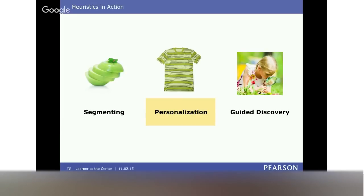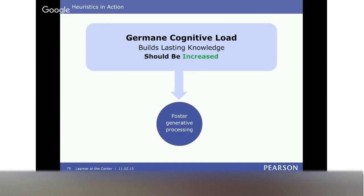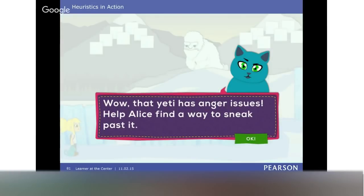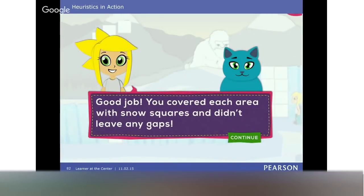Another heuristic is personalization — from multimedia theory, referring to conversational versus formal language, like t-shirt language. We're building on the germane cognitive load and fostering generative processing — our special sauce. Research shows conversational language helps improve learning. In the games, Flat Cat introduces Alice in a very conversational way. And there's a level with a Yeti with anger issues where they have to help Alice find a way — that very casual conversational language is used throughout, even in how feedback messages are communicated to the learner.